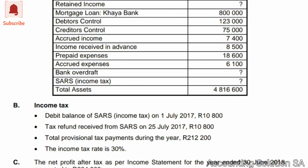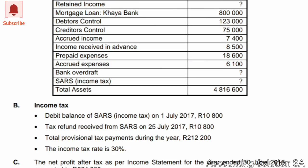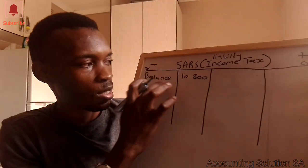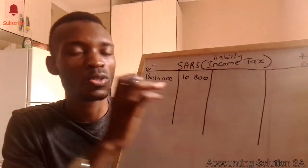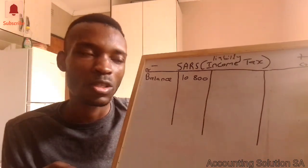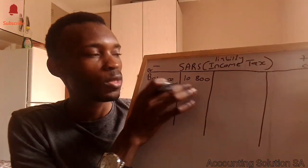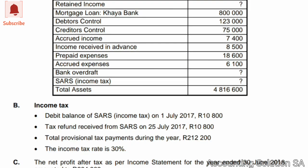Next, they said a tax refund received from SARS on 25 July 2017 is 10,800. Do we record that 10,800 again? No — the reason we have a debit balance is because SARS was owing us as a company. That means the amount they owed us was refunded on 25 July 2017, so there is no need to record it again. If we record it again we would be doubling the amount, which is incorrect.